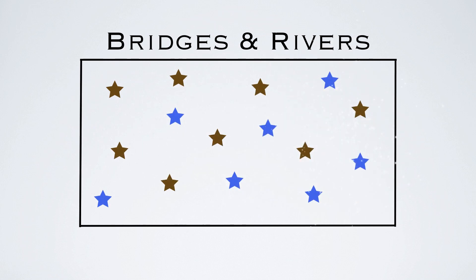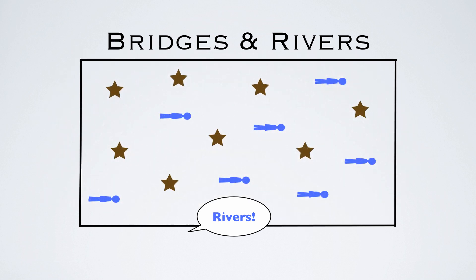When the music starts up again, they're all moving around throughout the floor. And if 'rivers' is called out, then all the rivers will lay flat and form a river, and then the bridges will have to go and jump over all the rivers.